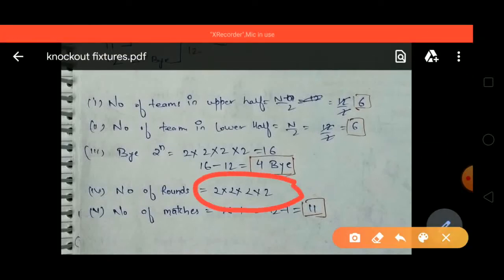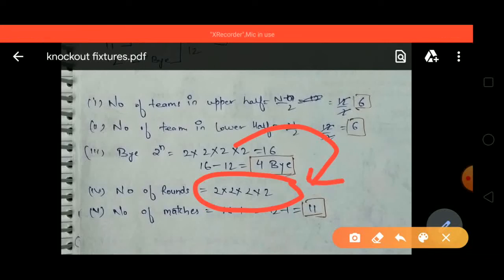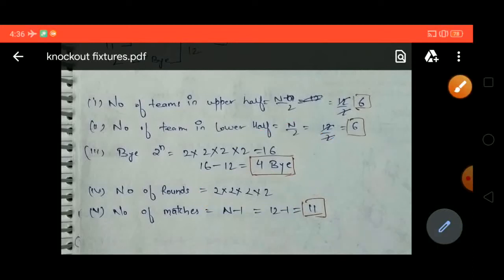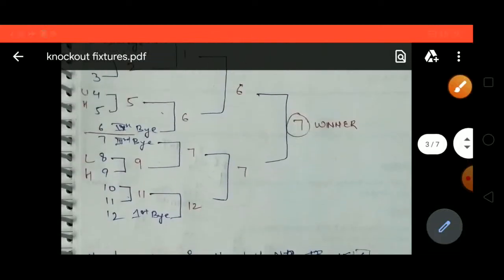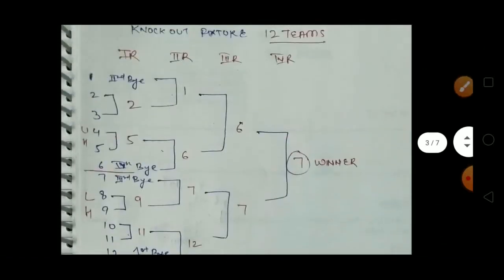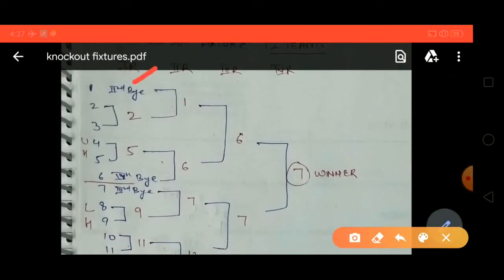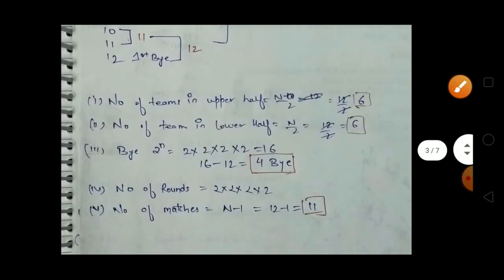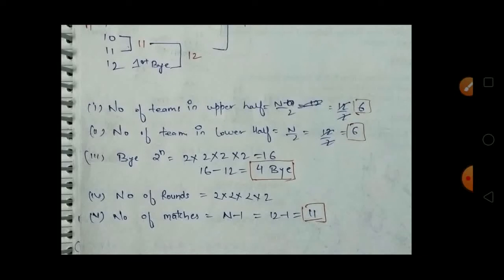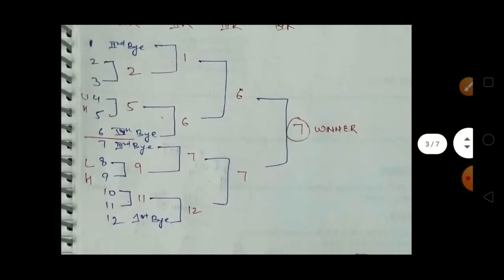Next is the number of rounds. Using the same calculation as byes — 2×2×2×2 = 16, meaning we multiply 2 four times — so we have 4 rounds. We can verify: first round, second round, third round, and fourth round. The number of matches formula is n minus 1. We have 12 teams, so 12−1 = 11 matches.